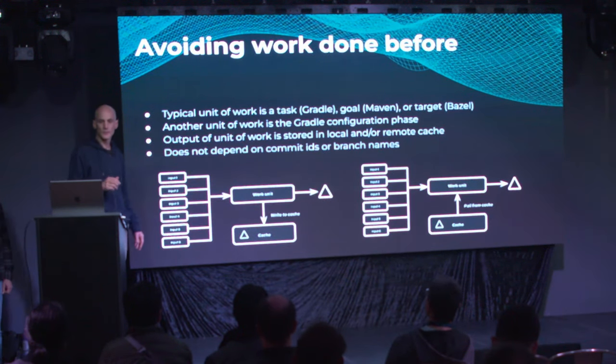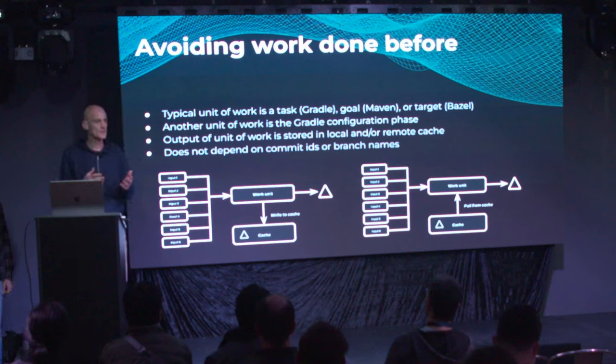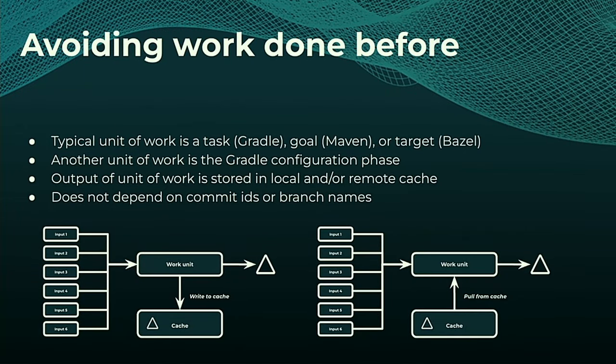If we want to avoid work by reusing outputs from previous work, the question is: what is your unit of work? Typically in Gradle or Maven, we use a task, and the artifacts are stored in a build cache. We could also use a different unit, such as the Gradle configuration phase — whose artifact is the task graph — stored in a configuration cache. No matter what we choose, we need to persist it so we can reuse it on later builds. Ideally we have both a local cache and a remote cache to share artifacts between developers or CI agents.